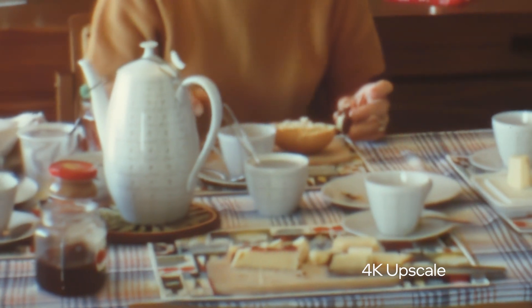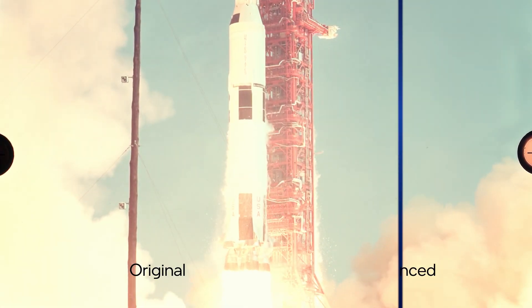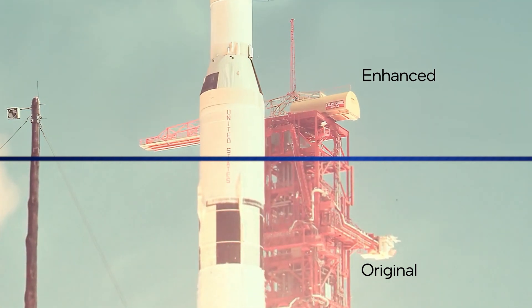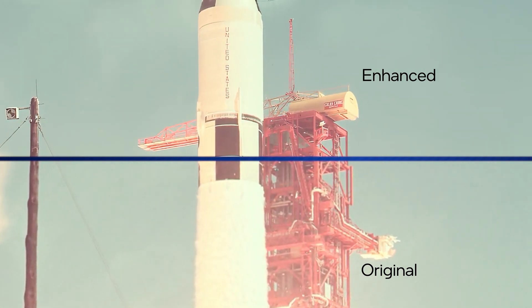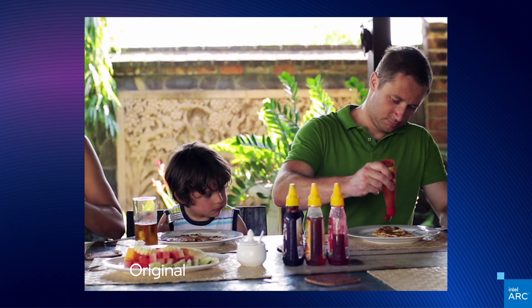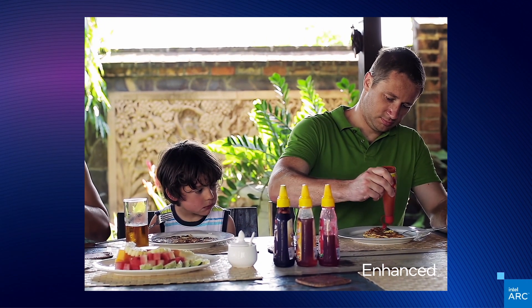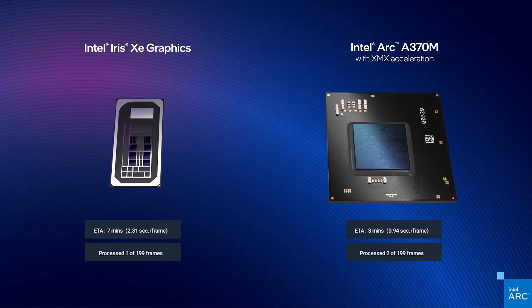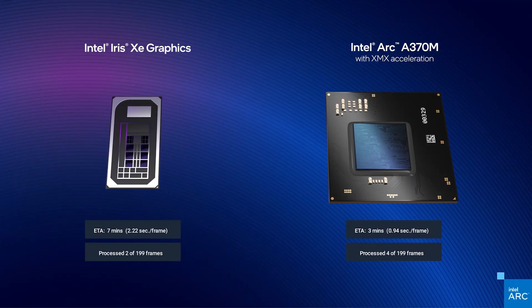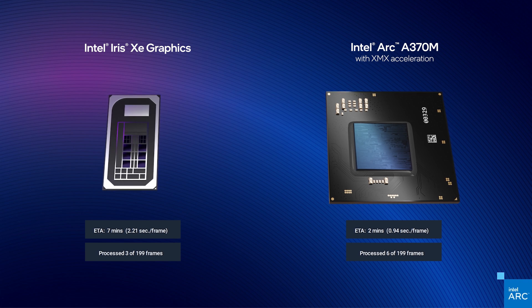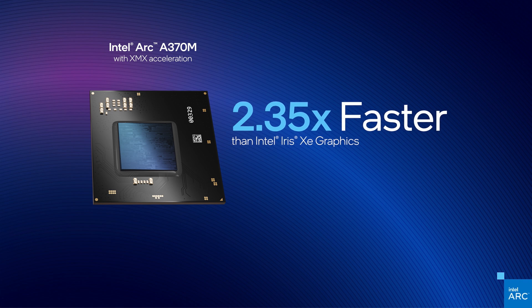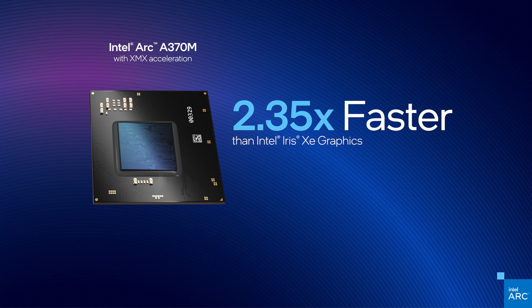Let's see how the power of AI works on some other scenes. In this historical clip, you can see the clarity and detail that's been added to the rocket and structure compared to the original. And even on more recent videos with lower resolution, Video Enhanced AI can improve the sharpness and detail of the scene while scaling up the original video. Our XMX engines seamlessly accelerate this compute-intensive AI process to give you amazing results in half the time. With the power of XMX, this upscaling is more than twice as fast as integrated graphics alone.